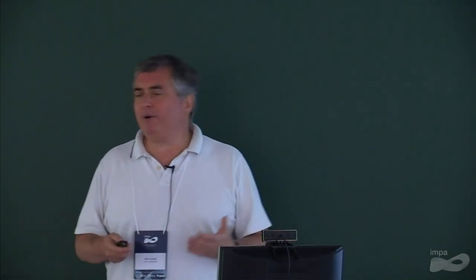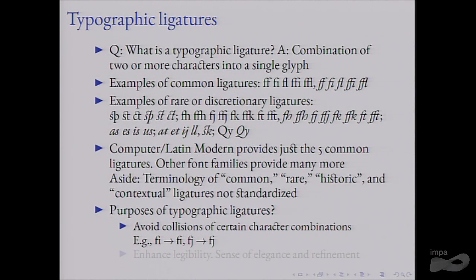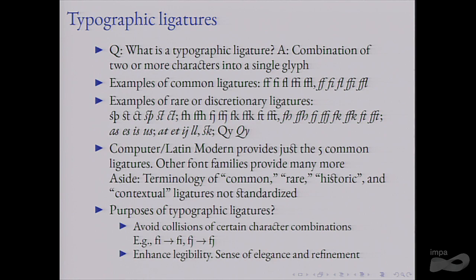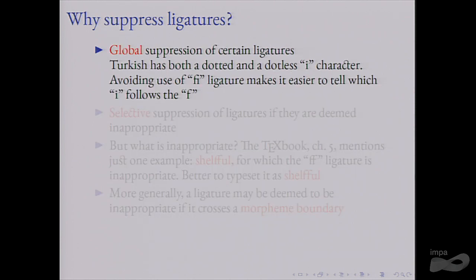Why employ typographic ligatures? One reason is to avoid collisions of certain characters. For example, F and I placed next to each other can produce an unfortunate blob depending on the font, so it's better to have an fi ligature. Similarly, FJ comes up quite often in Norwegian for words like fjords. But beyond avoiding blobs, there's also a matter of elegance and refinement — it's part of the way a font is supposed to look.